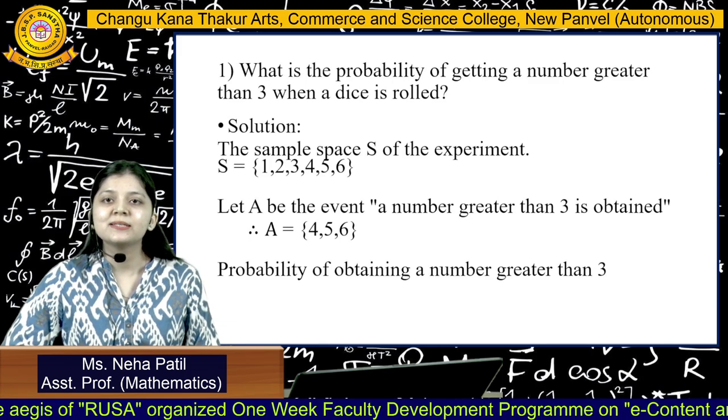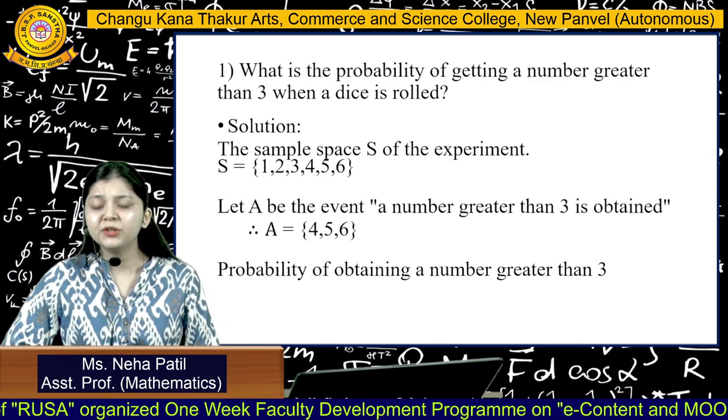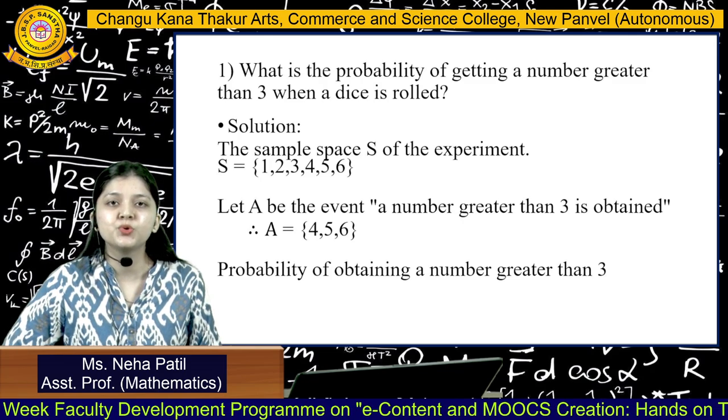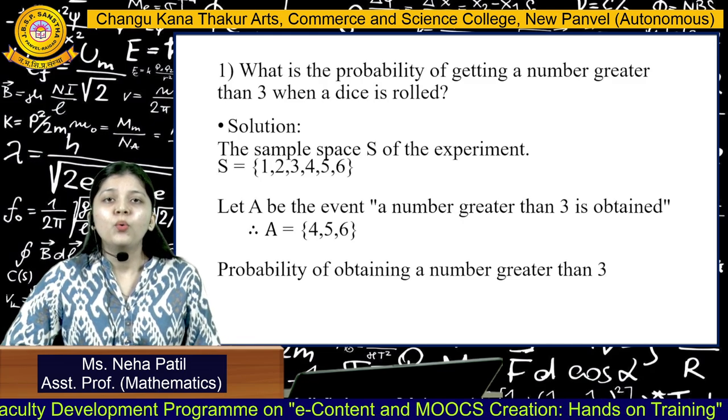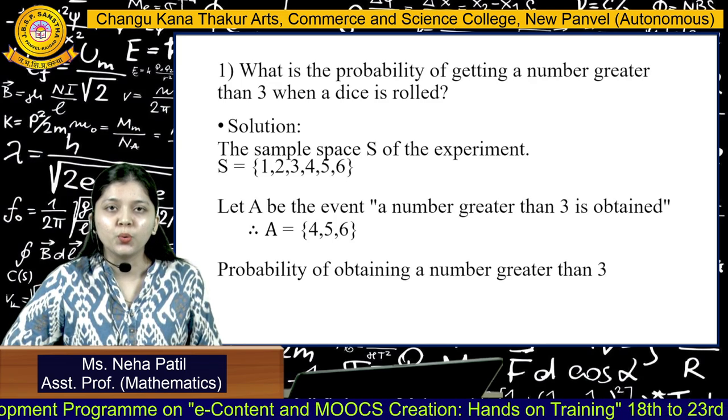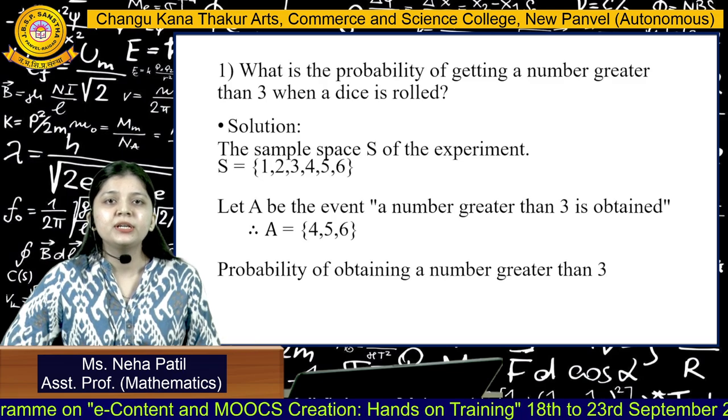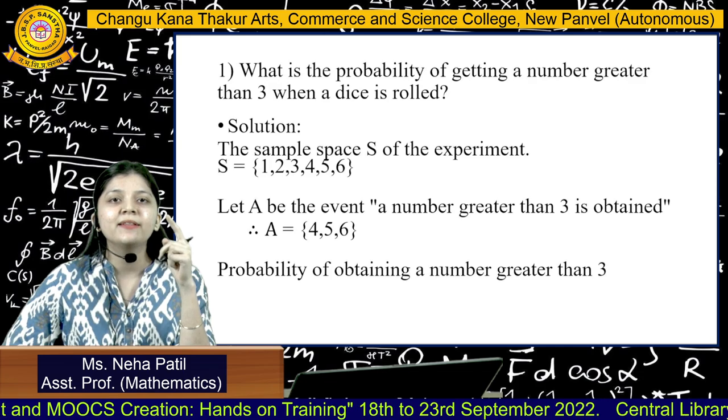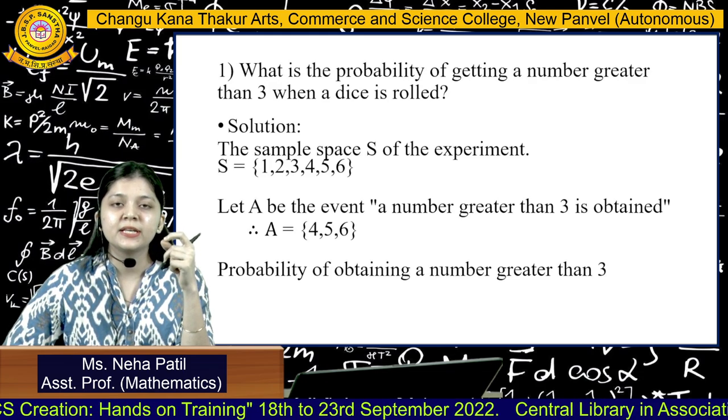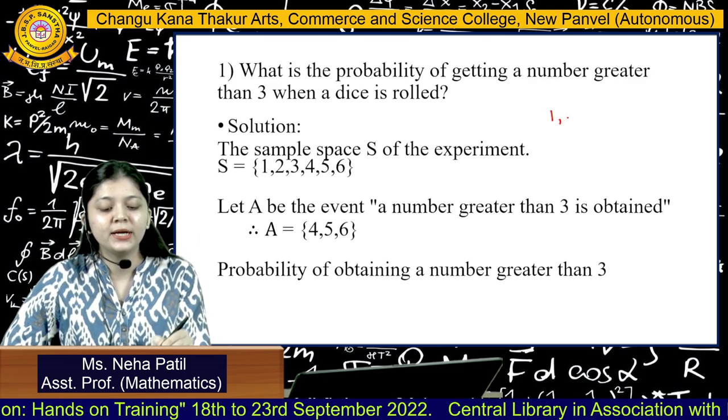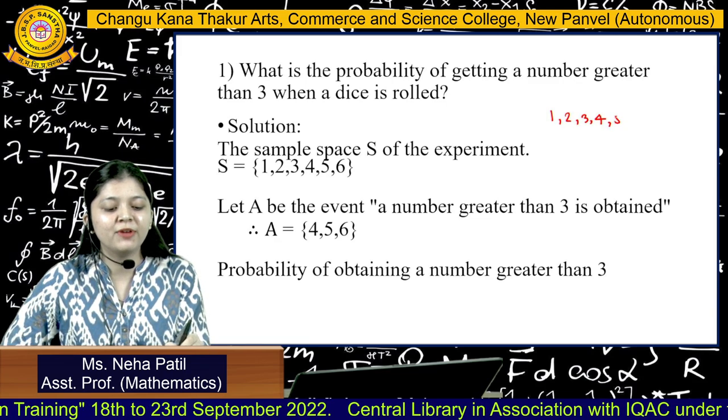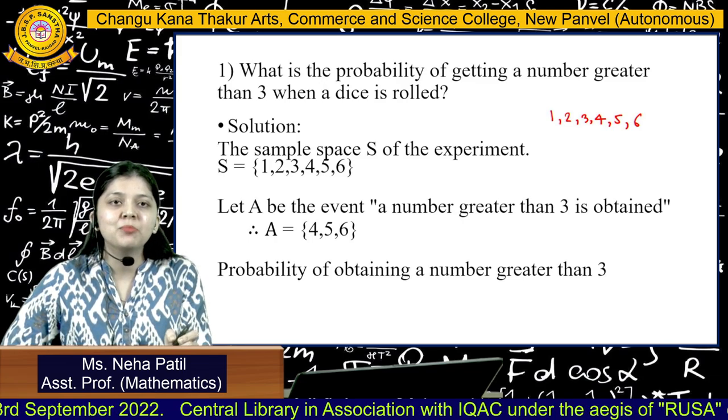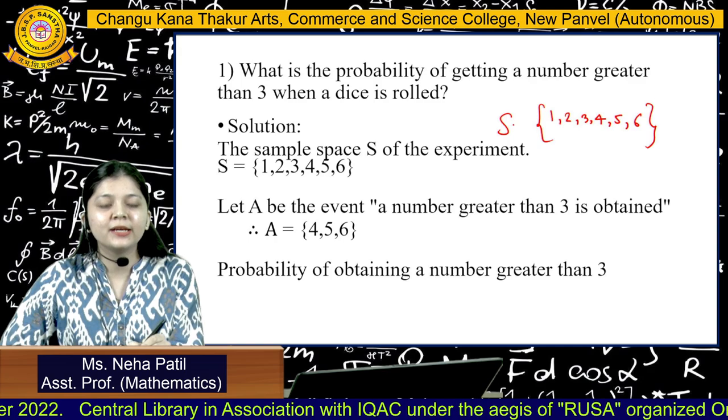Let's move forward to examples based on it. The first example is: what is the probability of getting a number greater than 3 when a dice is rolled? Here, we are talking about the experiment when the dice is rolled. Rolling a dice, we know that there are 6 faces to it, and on these 6 faces there are 6 numbers labeled, which is 1, 2, 3, 4, 5 and 6. Here my experiment is rolling a dice and my sample space would be all of these outcomes taken together.